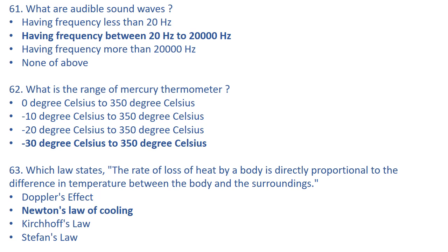What is the range of a mercury thermometer? The right answer is minus 30°C to 350°C. This is the range of a mercury thermometer used to measure temperature.